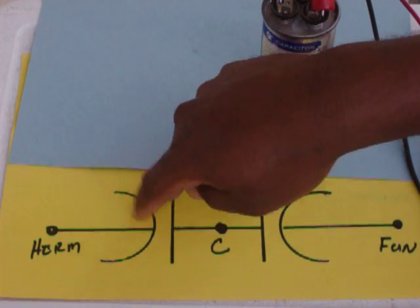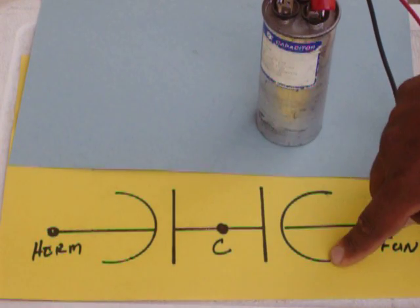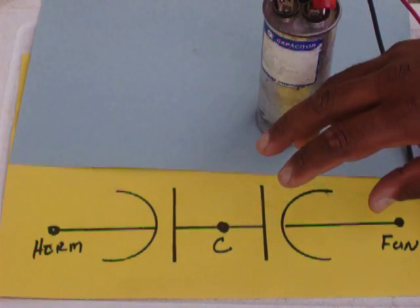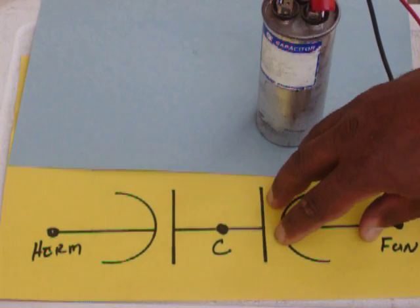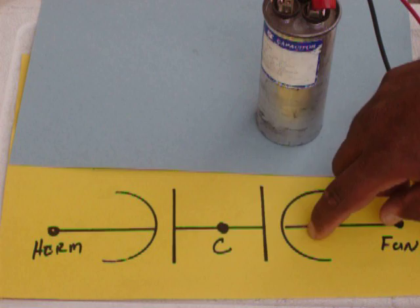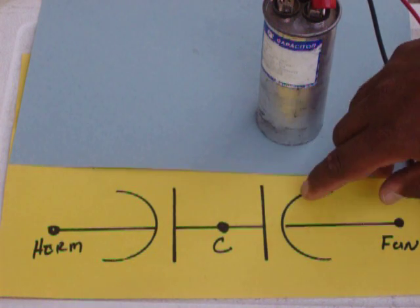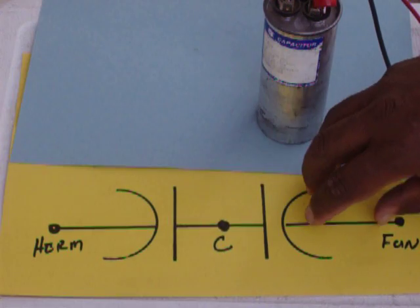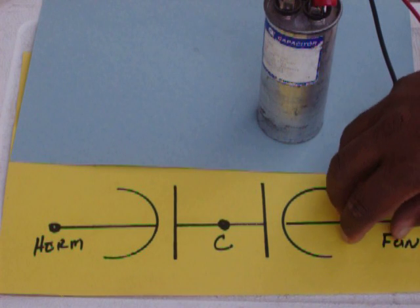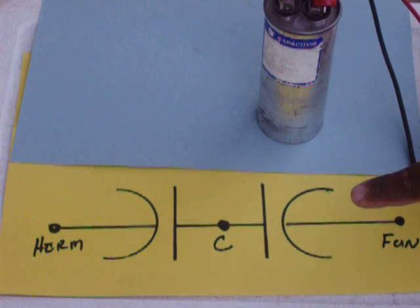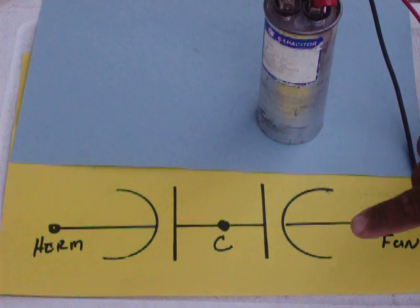It is possible to lose your fan side and the hermetic is still good. Lose your hermetic side and your fan is still good. So you can still have this, lose this and just add another capacitor. But it's always easy to just change the whole capacitor. Whenever you change the capacitor, make it easier on yourself and go back with the exact same capacitor that was in originally.